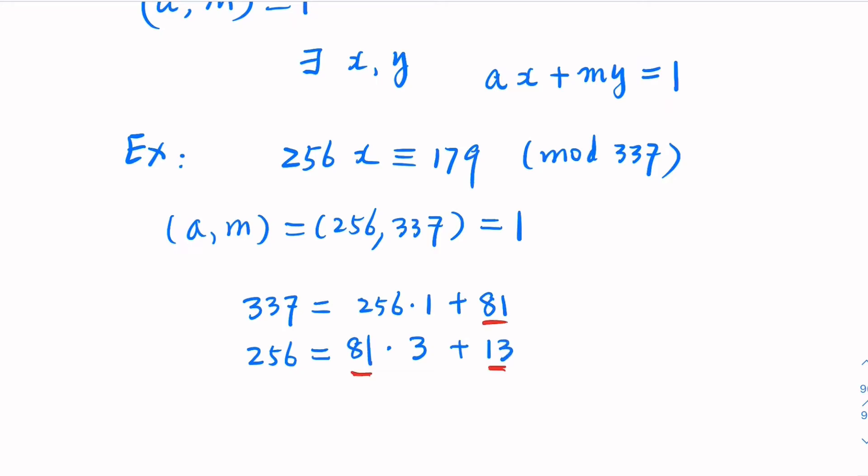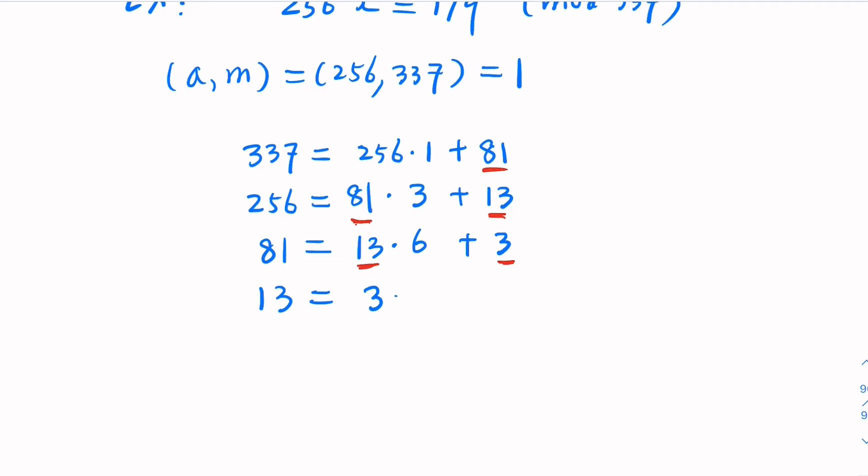Now, this time we're going to use 81 and 13, and it's going to be 13 times another number here, this is going to be 6, 78, and plus 3. The remainder is 3, and the smaller number is 13. In the next step, we're going to use 13 and 3 times something plus something. So here, that's 4, the remainder here is 1. So what we have done here, that's called Euclidean algorithm.